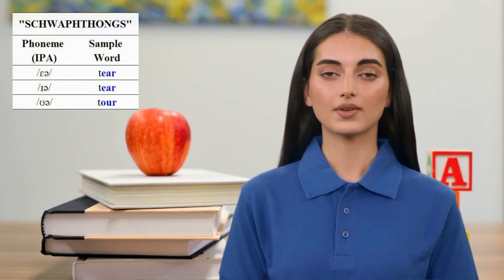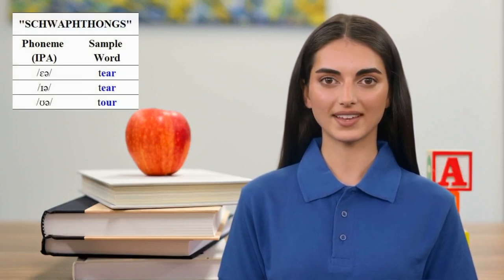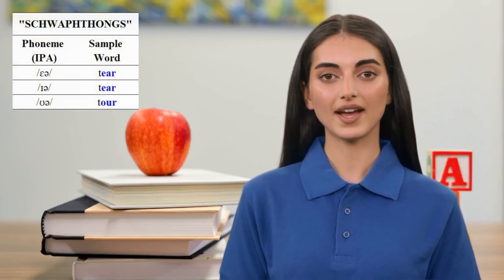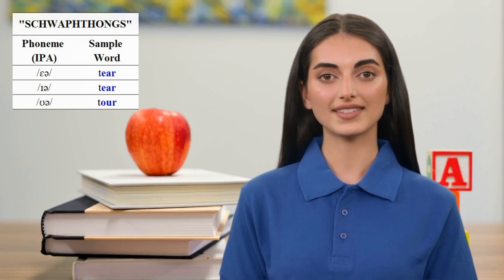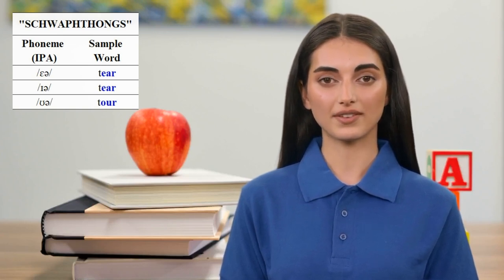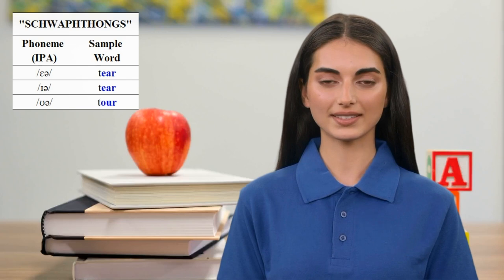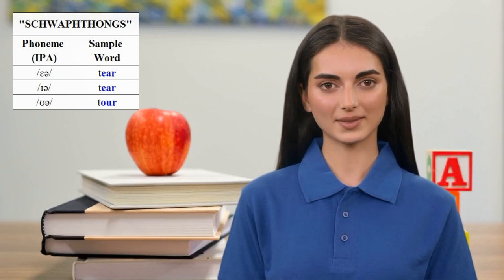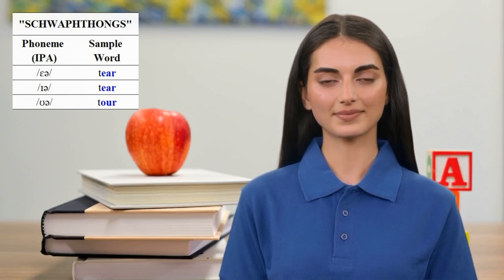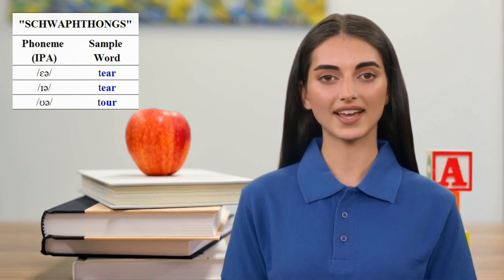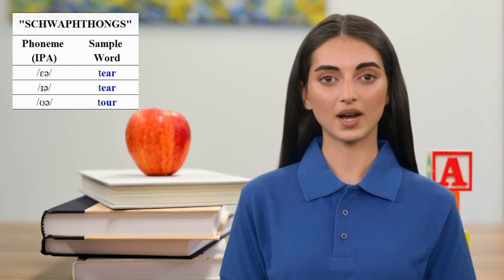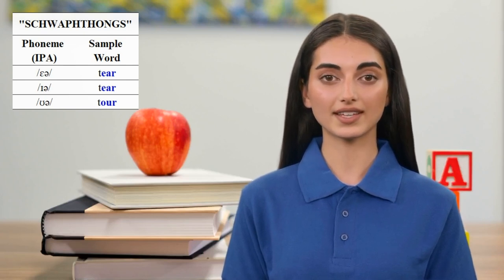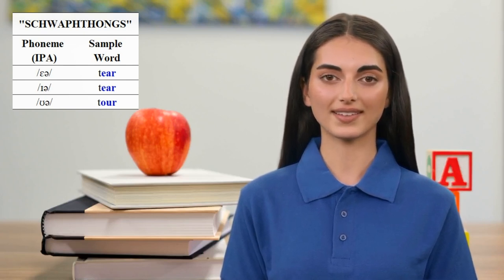Schwa is also a component of three diphthongs, of which there are eight altogether in English. A diphthong is a sequence of two vowels in which one blends seamlessly into the other within a single syllable. Let's refer to the diphthongs ending with schwa as schwa-fongs. Examples from RP are found in these words: tear, tear, tua.